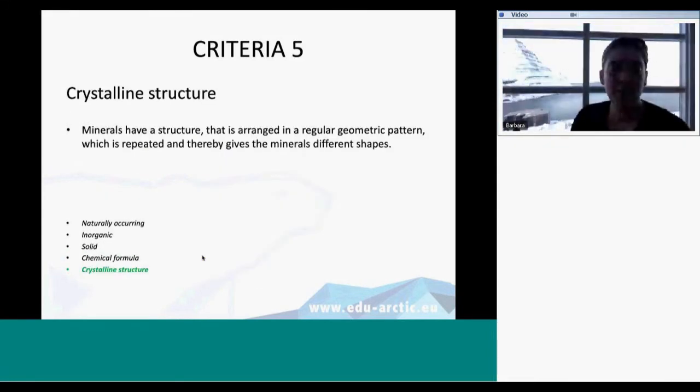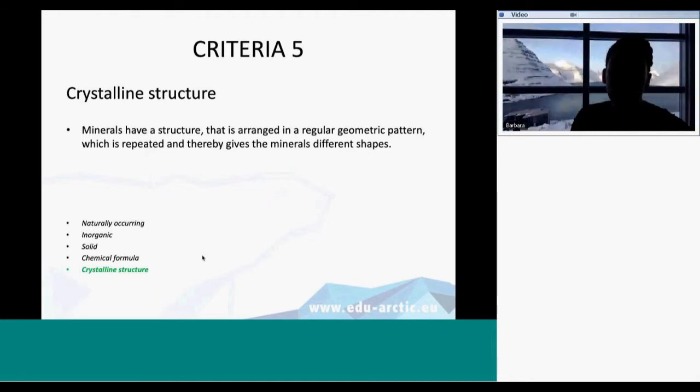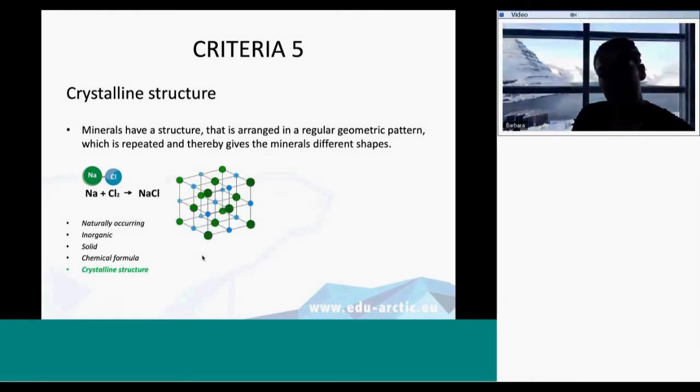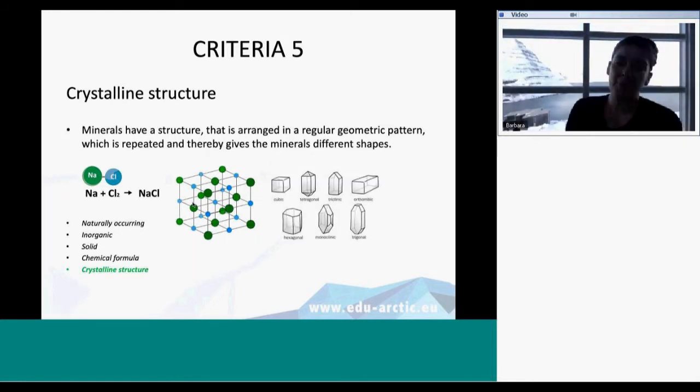If we go to the last criteria, the fifth criteria, it has to have a crystalline structure. That means the minerals have a structure arranged in a regular geometrical pattern. The pattern will repeat itself and the crystal, the mineral will grow by that. If you look at salt again, the sodium and chloride, here you can see the geometrical pattern. If you look at every green, you can see it has a blue attached to it all the way around. And the blue has a green attached all the way around. So it's repeated. Different kinds of minerals have different geometrical forms. They can be cubic, tetragonal, triclinic, orthorhombic, hexagonal, monoclinic, and triclinic. These are used for recognizing what kind of mineral you're looking at.